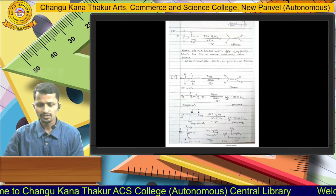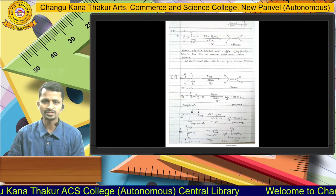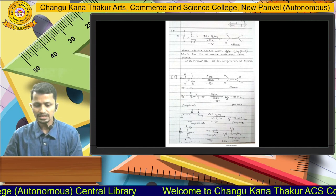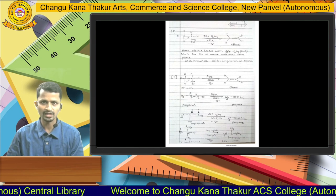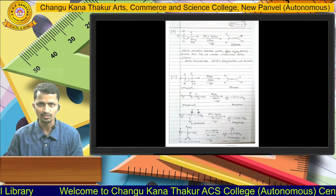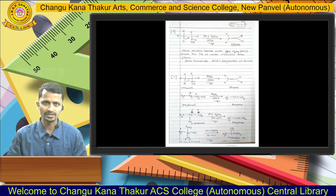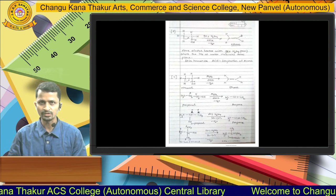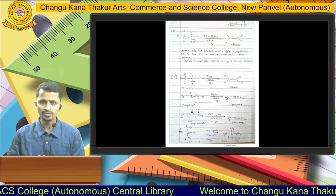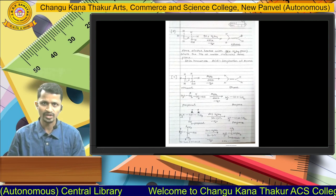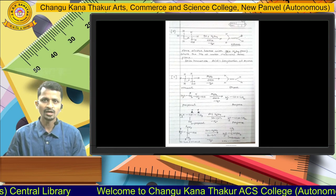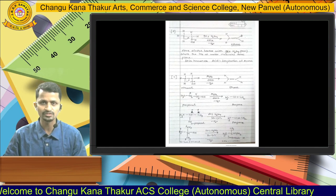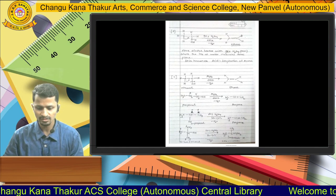Ethanol when treated with 95% sulfuric acid at a temperature of 453 Kelvin gives ethene. The carbon to which the OH group is attached is called the alpha carbon atom and the next carbon is the beta carbon atom. Hydrogen is lost from the beta carbon atom and the OH group is lost from the alpha carbon atom, giving alkene as the product.